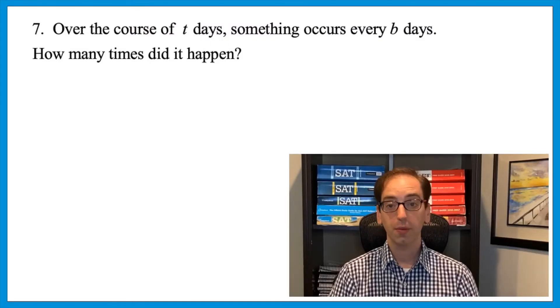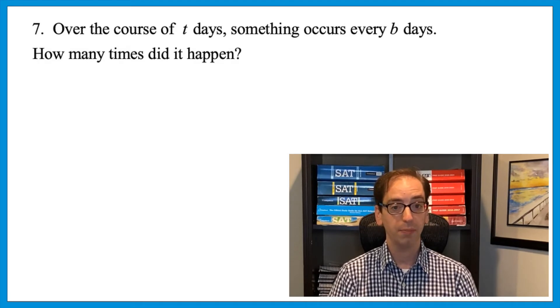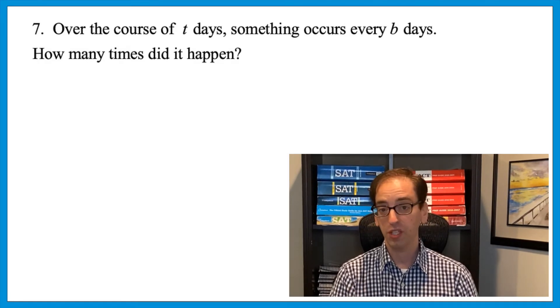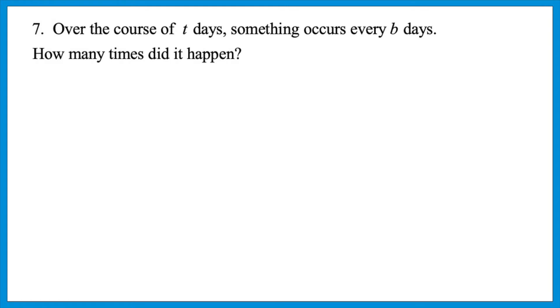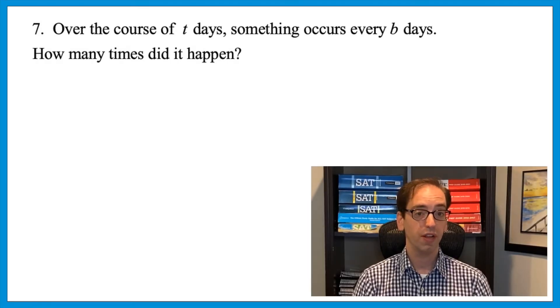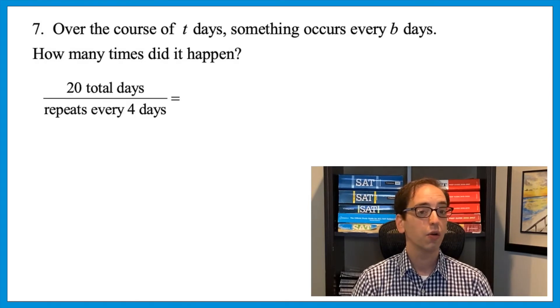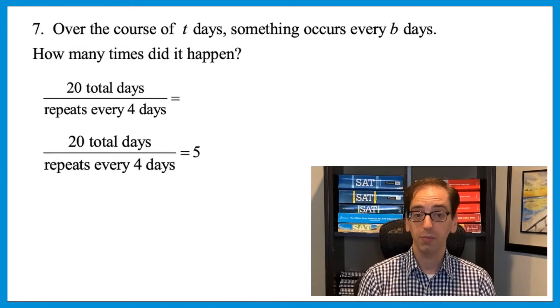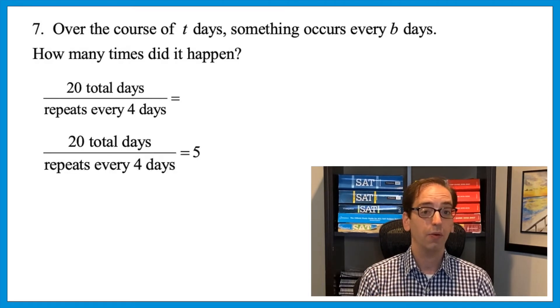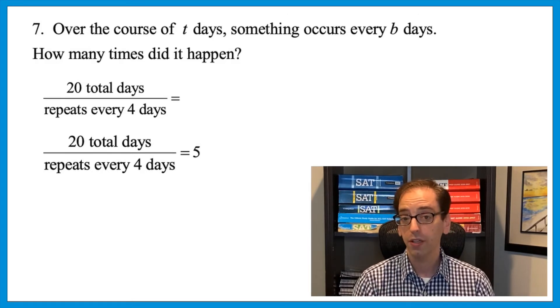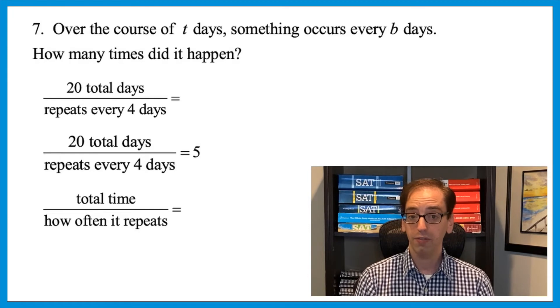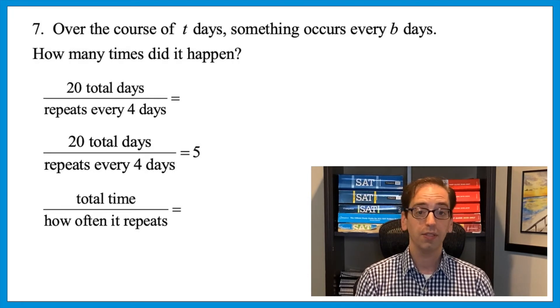Again, notice the recurring theme here. Treat variables the way you would treat numbers. Let's see how this now comes up on a modeling question. Over the course of t days, something occurs every b days. How many times did it happen? Press pause and give it a shot. Remember, we could use numbers instead of variables. So let's keep things simple. Let's say over 20 days, something repeats every 4 days. That means it would have happened 5 times. You took the total time and divided it by how often it repeats. The same thing is going on here. If something occurs over the course of t days every b days, that means it happened t over b times.